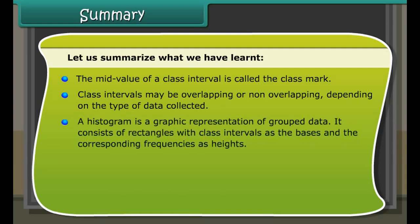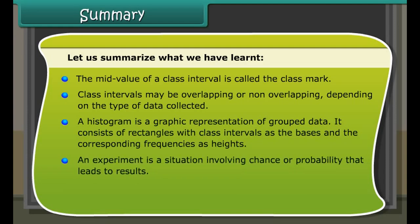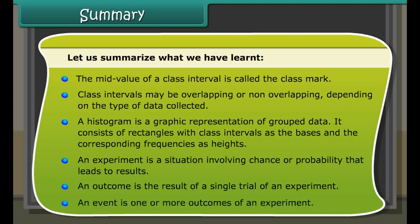Fraction of students who like yellow color is equal to 39 upon 200. Now central angle equals 39 upon 200 times 360 degrees, which equals 70.20. Fraction of students who like pink color equals 68 upon 200. Central angle equals 68 upon 200 times 360 degrees, which equals 122.40.